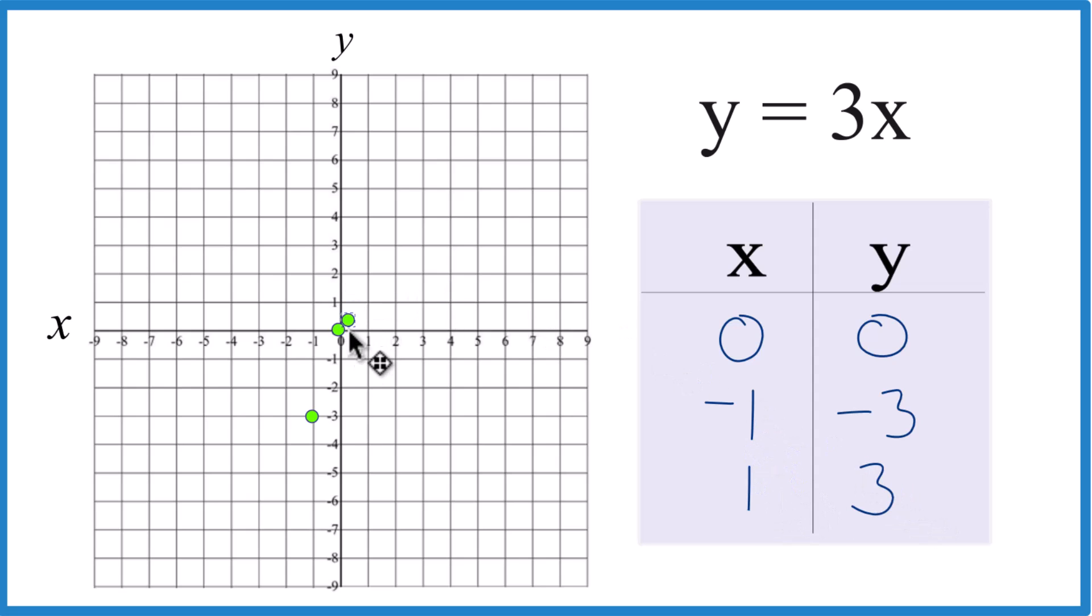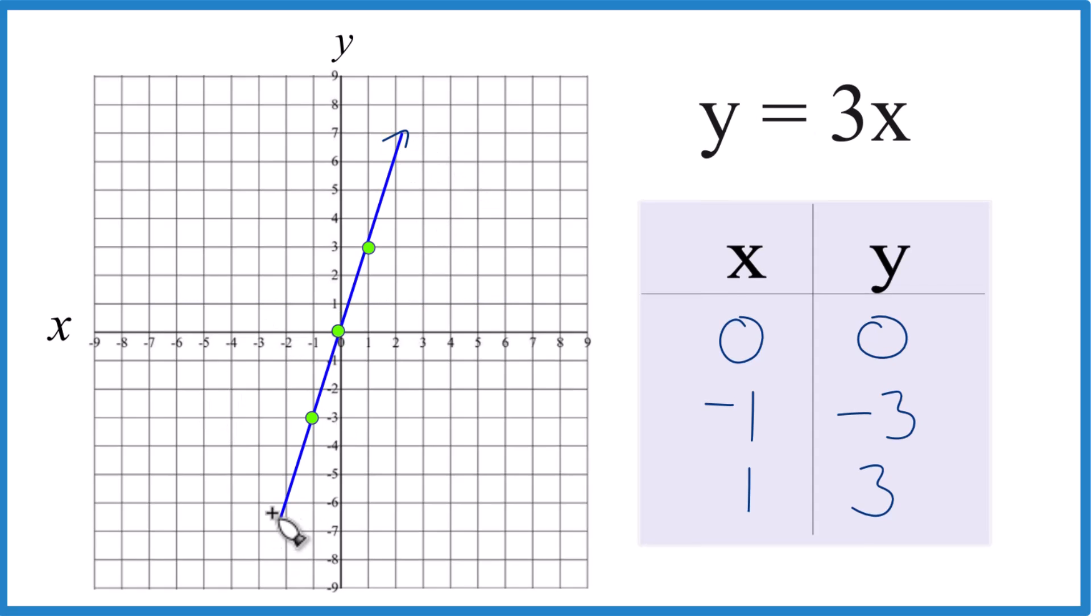x is 1, y is 3. x is 1, y is 1, 2, 3. And there you can see the line. Let's put a line through that. Then we could put arrows, show it goes to infinity.